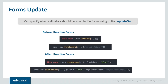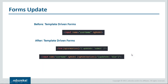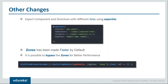Additionally, you can now specify async validators directly in the options object instead of as a third parameter. There have been other changes as well — for example, they introduced exportAs, using which you can export components and directives with different names or aliases. Also, zones have been made faster by default. Zones are execution contexts that allow change detection in Angular. It's now possible to bypass zones for better performance by bootstrapping your application with the ngZone option set to 'noop'.